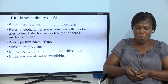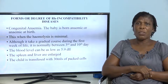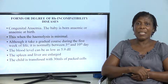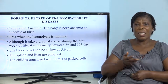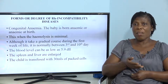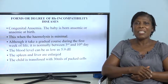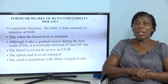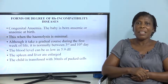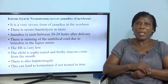We also have some form of congenital diseases in these babies. Congenital anemia can set in when the hemolysis of the baby is minimal. Although it takes a gradual course, during the first week of life it is normal, and by the third to tenth day everything stabilizes. The blood level can fall as low as 5.9. The spleen and liver also enlarge, and the child should be transfused with 30 millilitres of packed red blood cells.